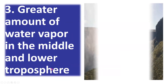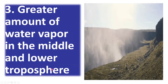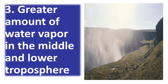Condition 3: there is a greater amount of water vapor in the middle and lower troposphere. The troposphere is the first layer of our atmosphere where most weather disturbances happen. If there is a greater amount of water vapor, it fuels the cyclone core.